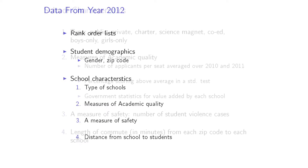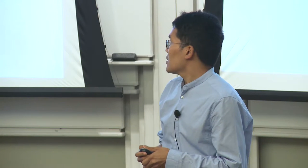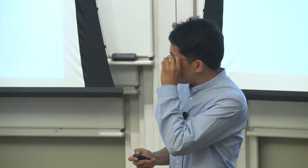The school types include public, private, charter, science magnet, co-ed, boys only, and girls only. The measures of academic quality are threefold: number of applicants per seat averaged over 2010 and 2011; the percentage of students scoring above average on a standardized test; and government statistics for the value added by each school. The measure of safety at each school is the number of student violence cases. The distance data is the length of commute in minutes from each zip code to each school.